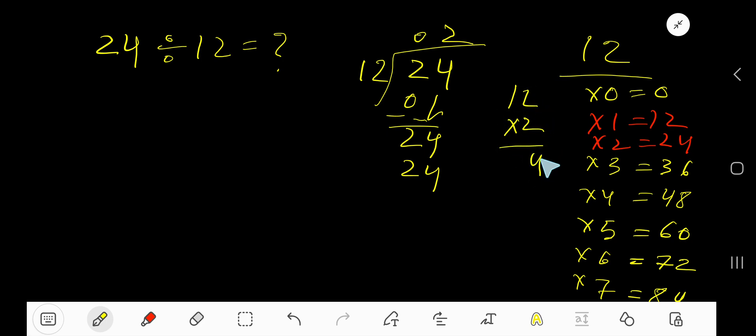2 times 2 equals 4, 2 times 1 equals 2, so 24. Right. Subtract, we get 0. As our remainder is 0 and there is no digit left in the dividend, we are done. Our answer is 2.